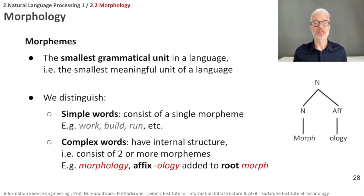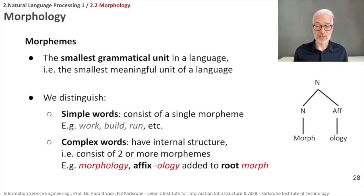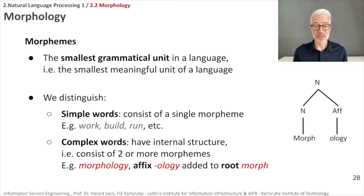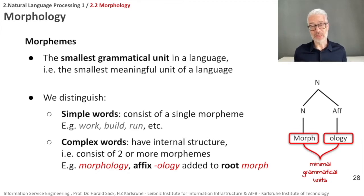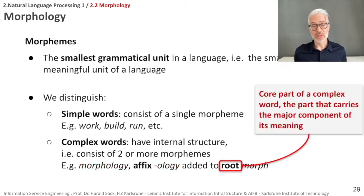Morphological parsing is the process of finding out how a word is constructed. You do this by deriving a tree — a morphological parse tree. For example, 'morphology' is a noun which consists of a noun root 'morph' and an affix 'ology.' Here, 'morph' and 'ology' are the minimal grammatical units — the morphemes.